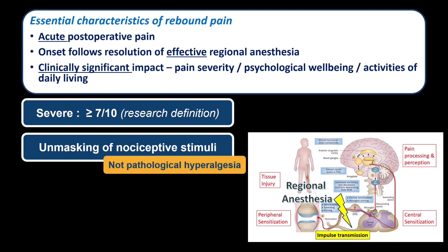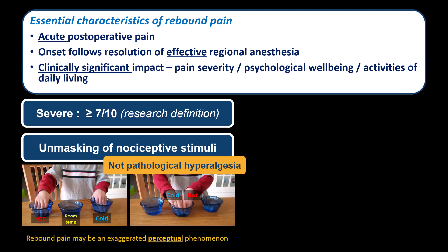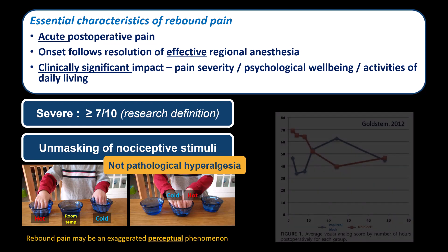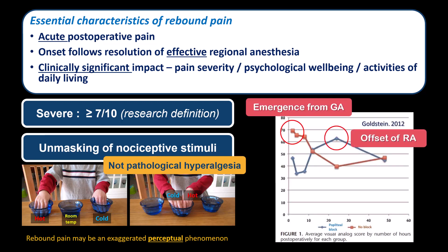It's important to note that there is no evidence that regional anesthesia causes a pathological hyperalgesia, by which I mean a truly exaggerated activation of nociceptors in the area of injury. Instead, it may be largely a perceptual phenomenon — a contrast bias, as illustrated by the experiment of dunking your hand in lukewarm water after it's been in very cold or hot water for a while. This is supported by the fact that pain scores following emergence after a general anesthetic are often as high as pain scores that follow offset of a regional anesthetic block.